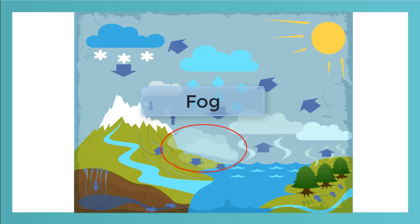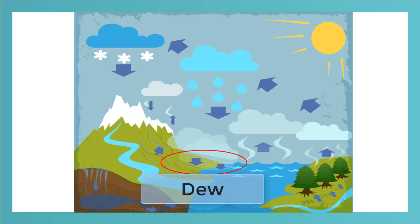When a cloud of tiny water droplets is very close to the ground, it is called fog. Sometimes, dew can form. Dew is when water vapor has condensed into water droplets on an object.